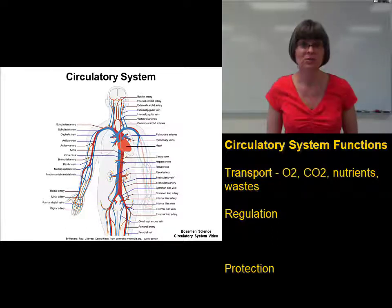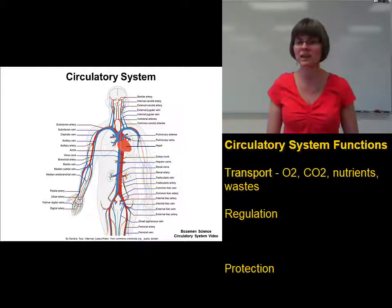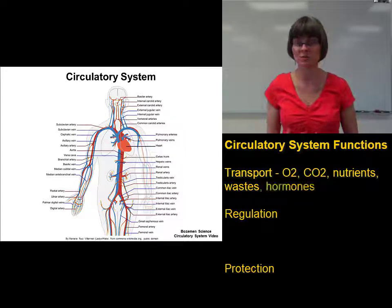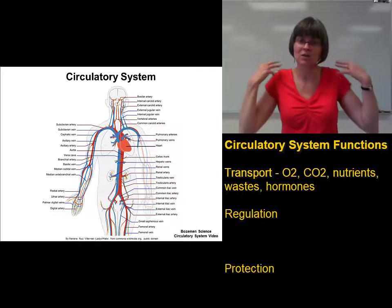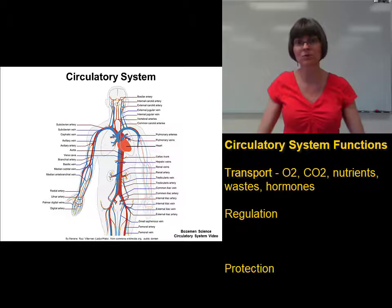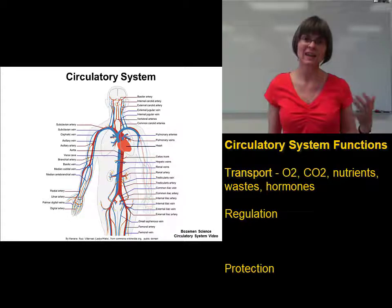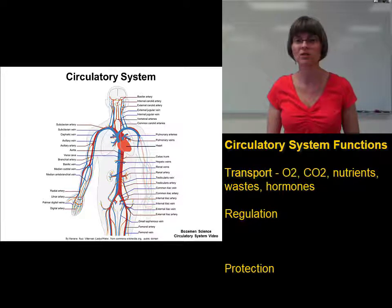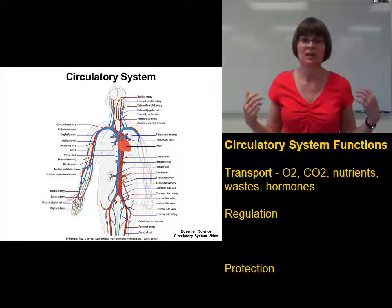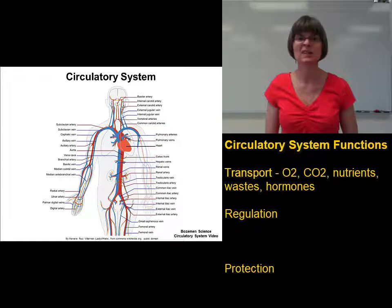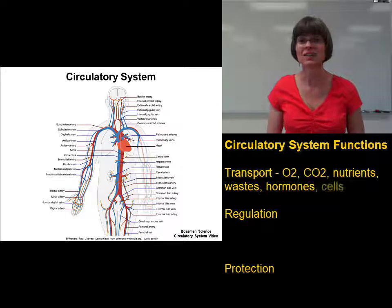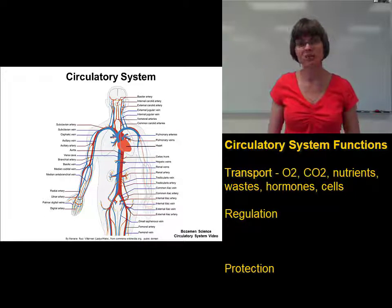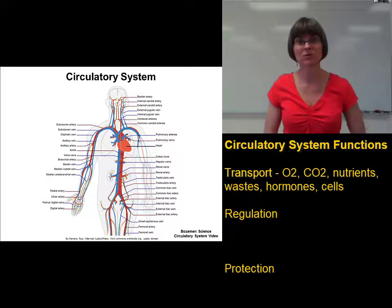A couple more things that the circulatory system transports include hormones — signaling molecules released into the bloodstream that travel to their target cells. Things like insulin and glucagon for regulating blood sugar, pituitary gland hormones for metabolism and growth, and testosterone and estrogen for development of sexual organs are all transported by the circulatory system. Cells are also transported by the circulatory system, traveling from one part of the body to another.